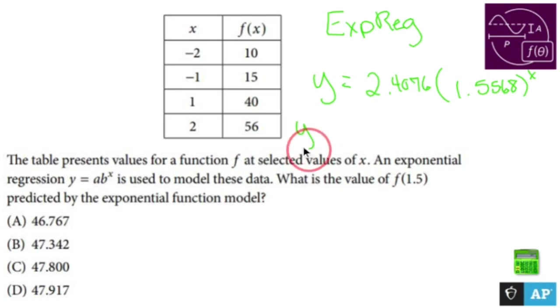So you just type that into a regular calculator, 2.4076 times 1.5568 to the 1.5 power, and the number that it spits out for you is 46.7663.